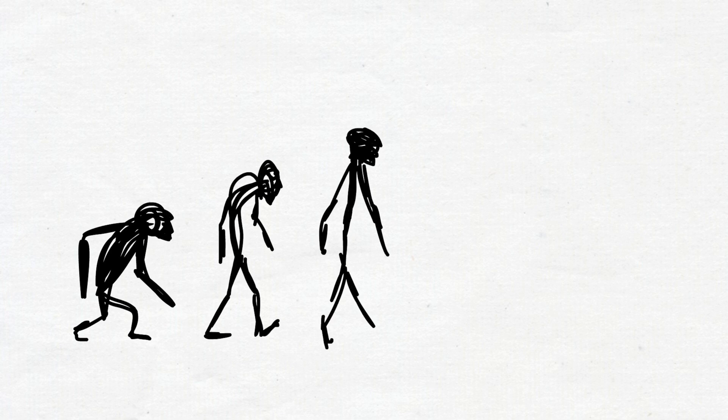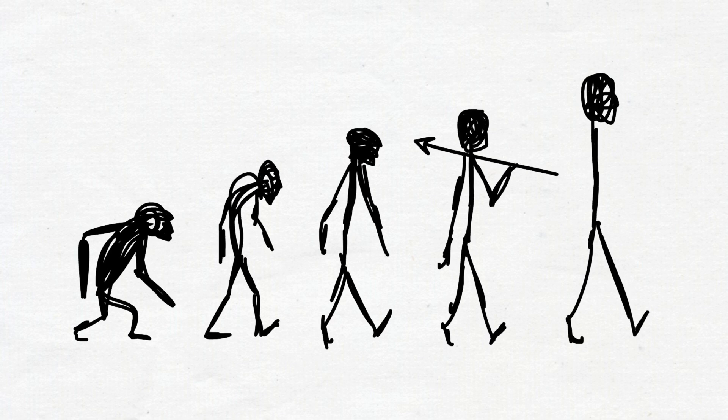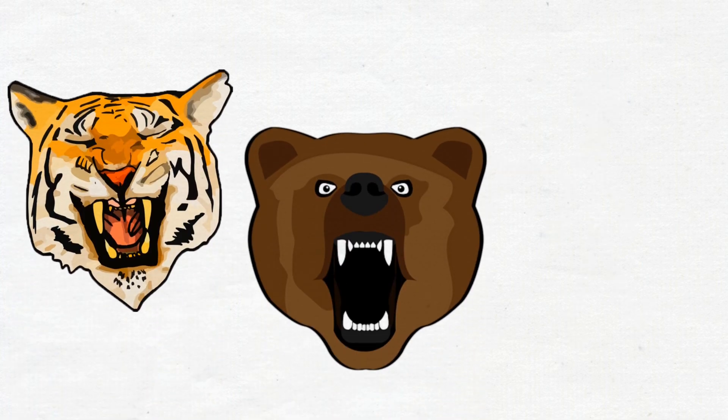Because evolution, over millions of years, selected the brains of our ancestors who survived such life-threatening dangers, especially big predators trying to kill and eat them.